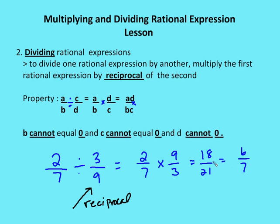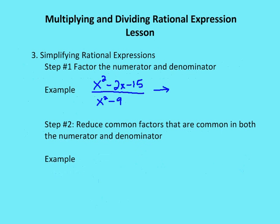Note that 18 over 21 is a correct answer, but it's not in simplified form. As a student, that would earn partial credit but not full credit, because the answer must be in simplified form.